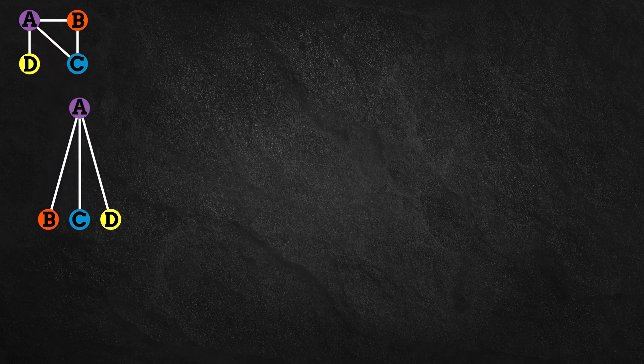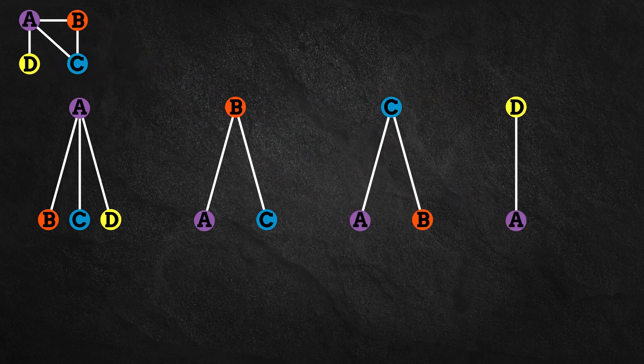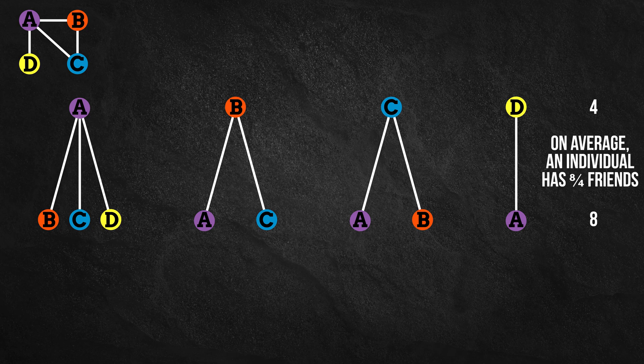Based on this graph, Alice is friends with Bob, Carol, and Dan. Bob is friends with Alice and Carol. Carol is friends with Alice and Bob. And Dan is friends with Alice. There are four individuals with a combined total of eight friends, so on average an individual has eight divided by four — on average, two friends.